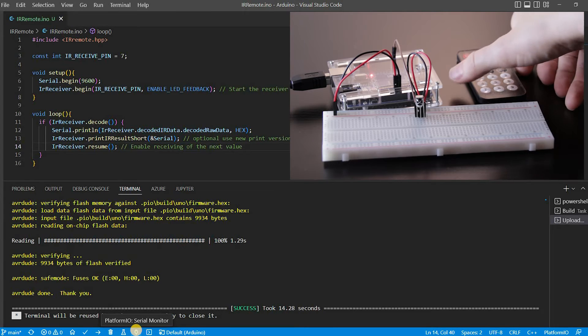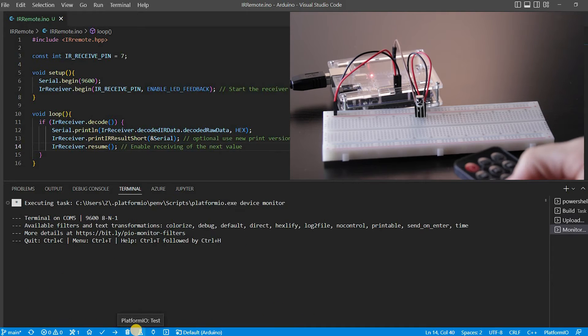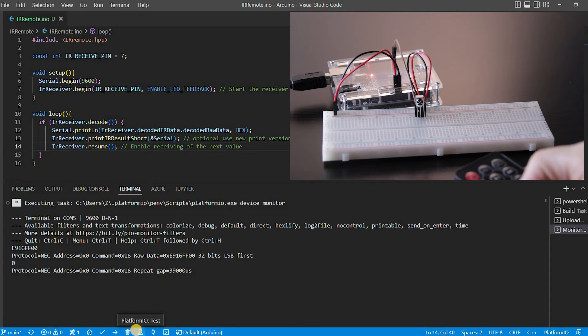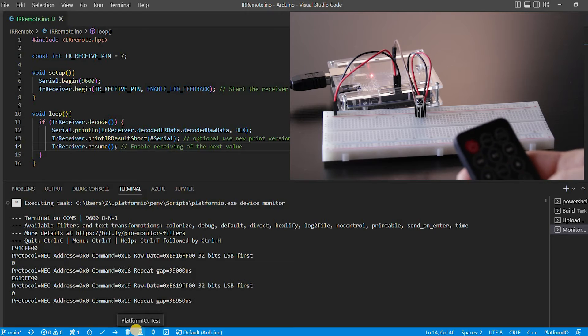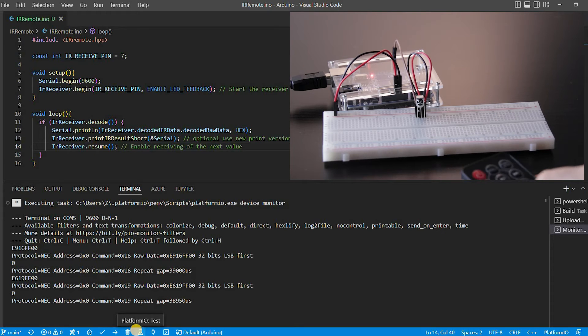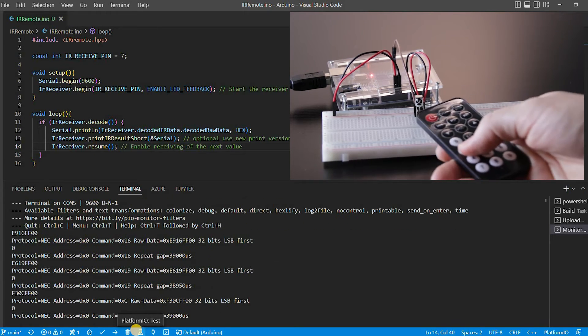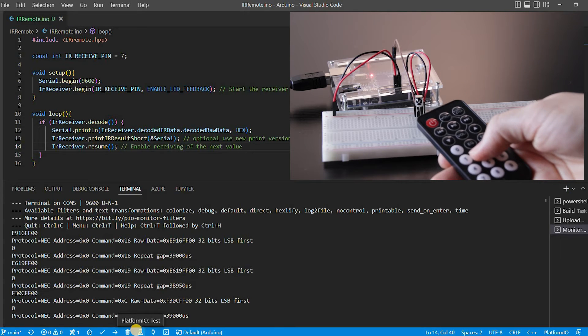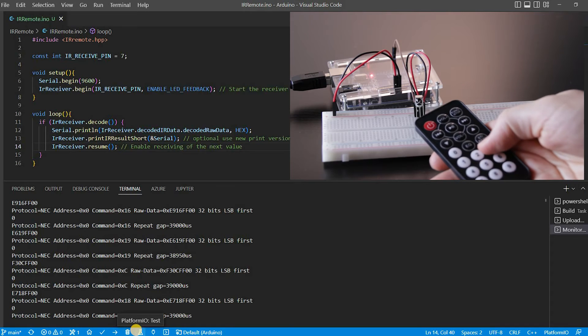Now let's do a test. You can see this remote uses the NEC protocol which is one of the most known standard protocols. It defines the way a code should be modulated as a signal. Each time you press a button on the remote control a unique hexadecimal code is generated.